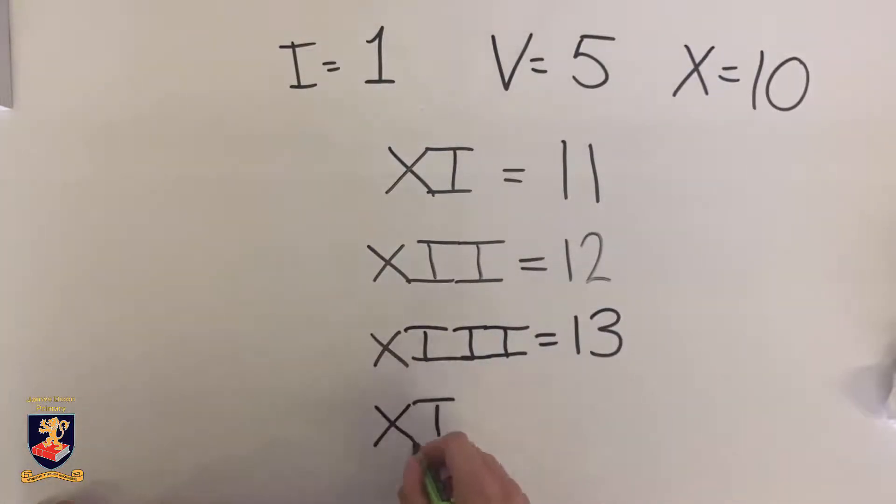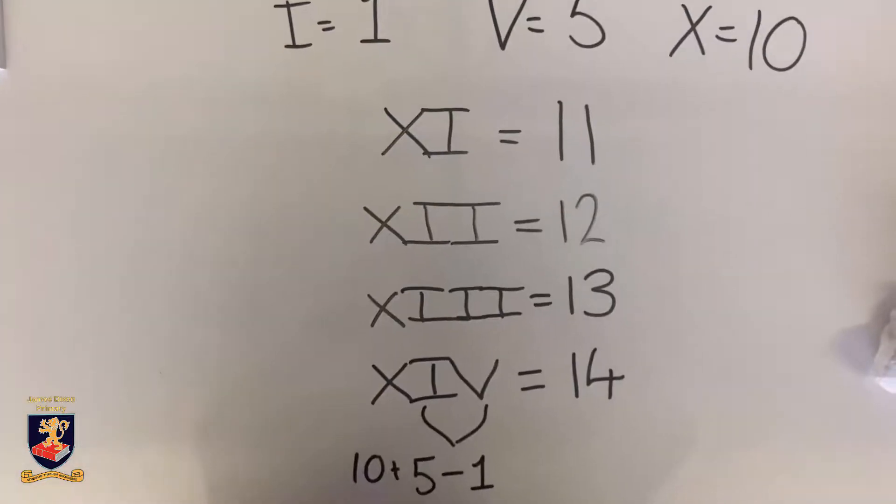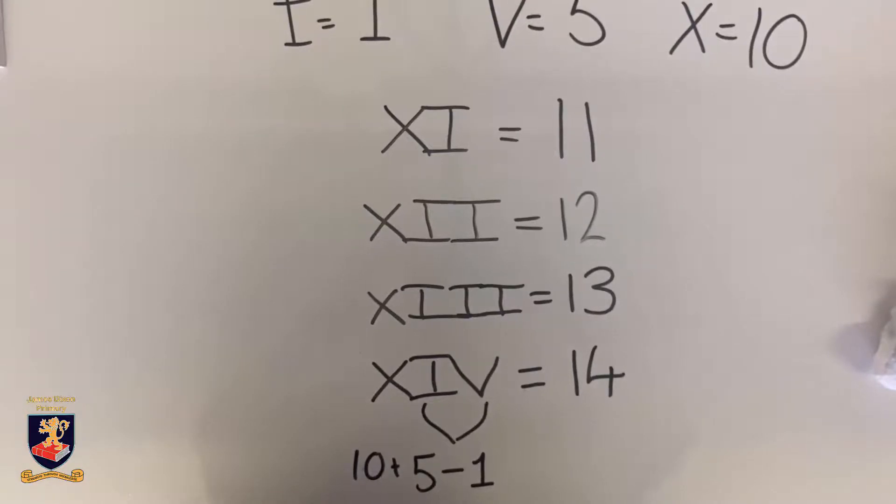When we write fourteen, it's written as XIV. We have one less than five, with ten, to make fourteen.